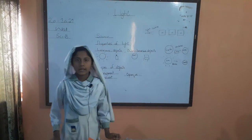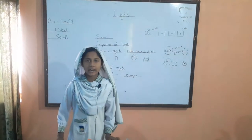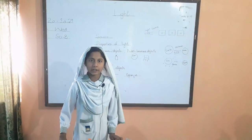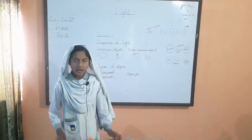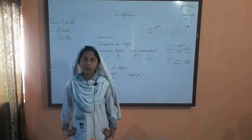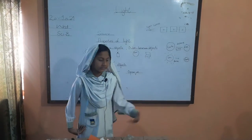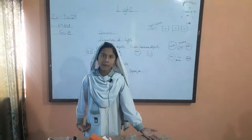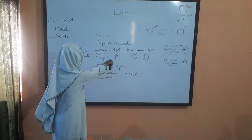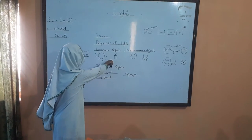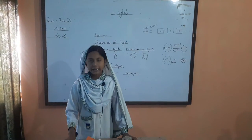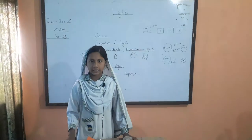Opaque. The objects which do not allow light to pass through them are called opaque objects. Like home and me — I am an opaque object. This table is an opaque object. This board is an opaque object. The light cannot pass through them, so we say that it is an opaque object.